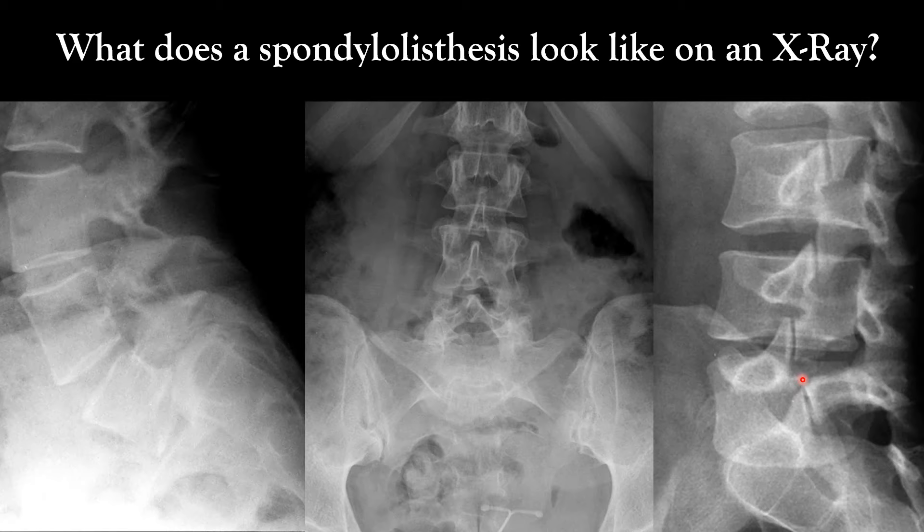On the frontal radiograph — this is L1, 2, 3, 4 and this is L5 — we can see an inverted Napoleon hat sign. We're basically seeing an axial presentation of that L5 vertebral body. This is a good example of what a spondylolisthesis looks like, and we'll break it down and look at all the different pieces of it.